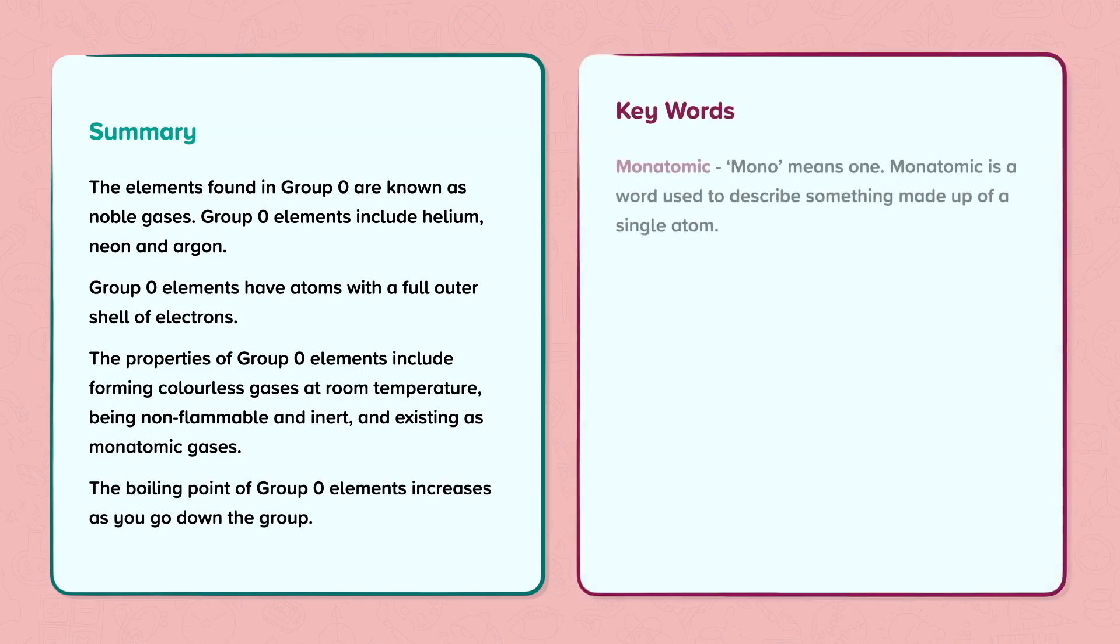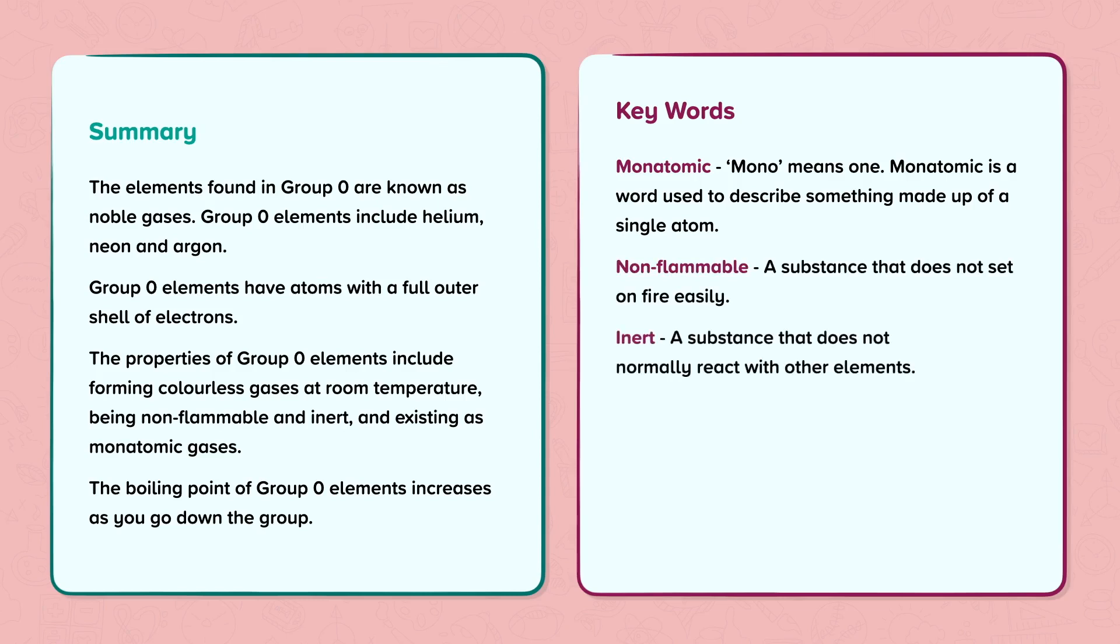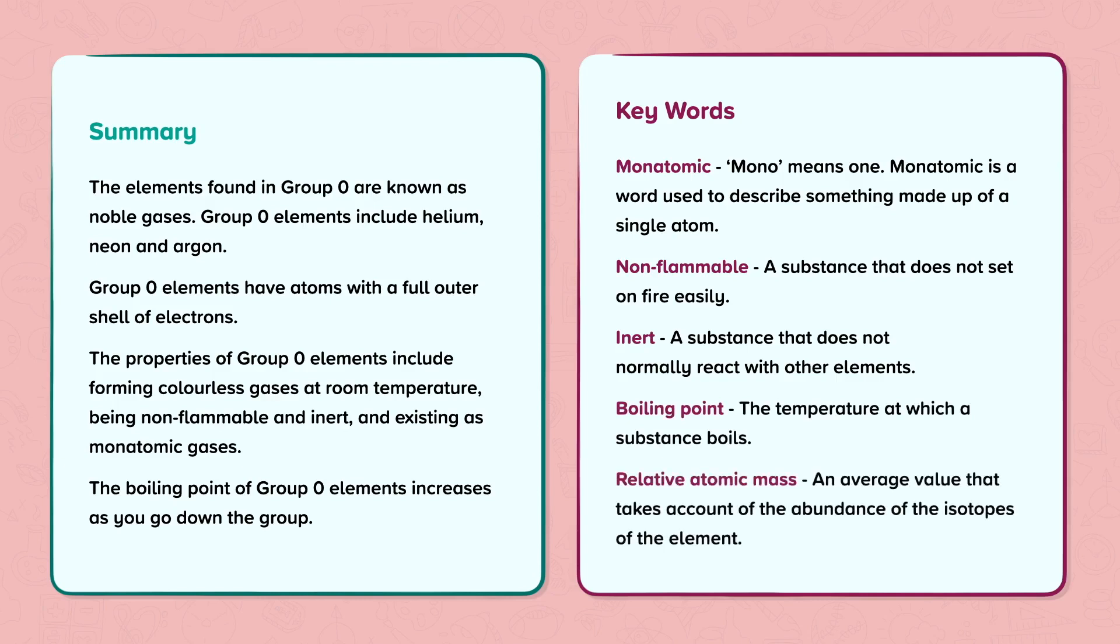Keywords: Monatomic - Mono means one. Monatomic is a word used to describe something made up of a single atom. Non-flammable - A substance that does not set on fire easily. Inert - A substance that does not normally react with other elements. Boiling point - The temperature at which a substance boils. Relative atomic mass - An average value that takes account of the abundance of the isotopes of the element.